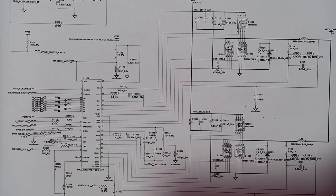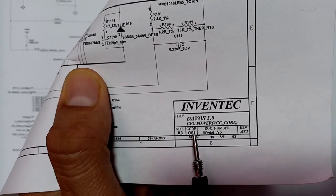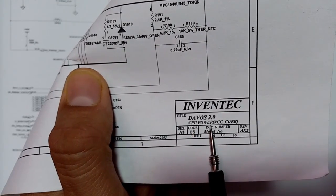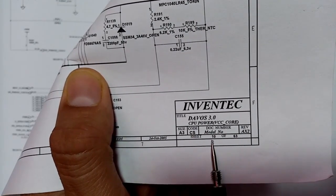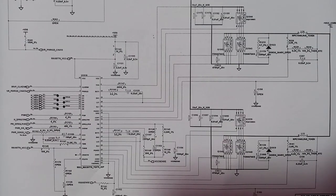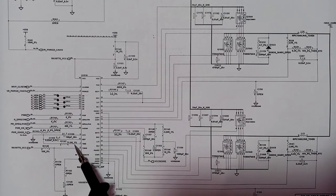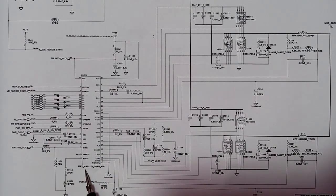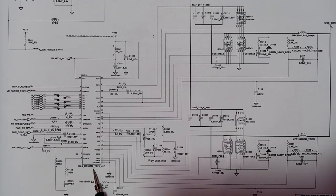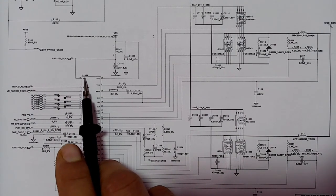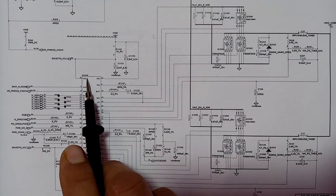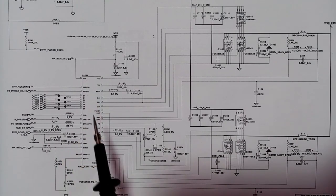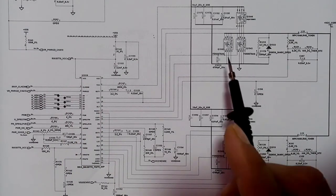We're going to see the CPU power VCC core circuit. Here we have the CPU power VCC core — EPH10. This is basically the circuit where we have the IC, the CPU IC. Here we have the Maxim 8770, and its reference on the motherboard is U1018.